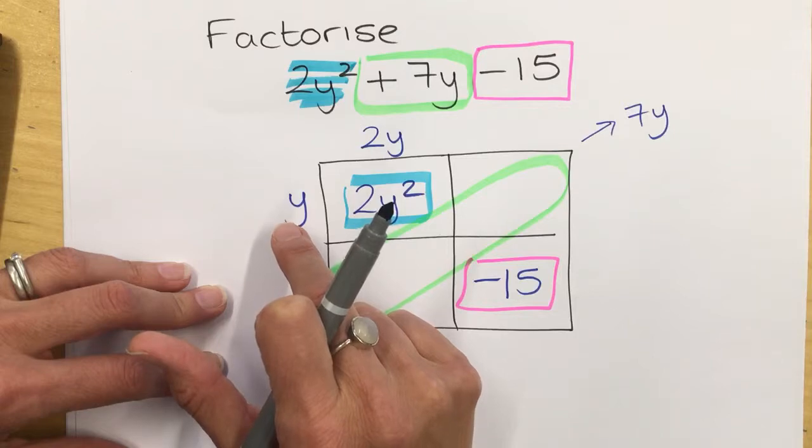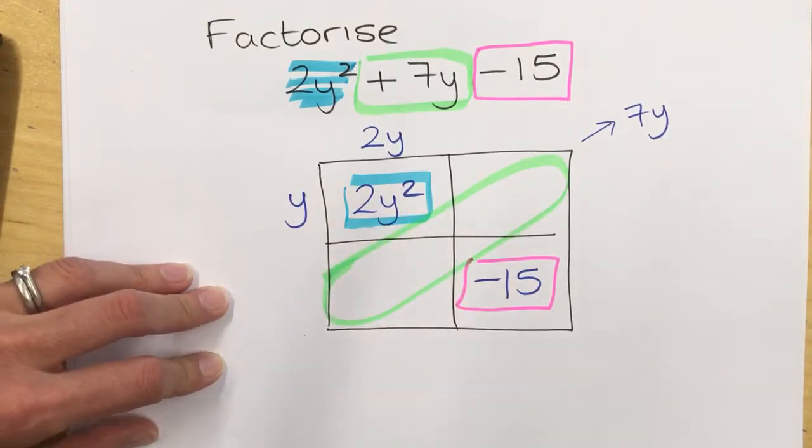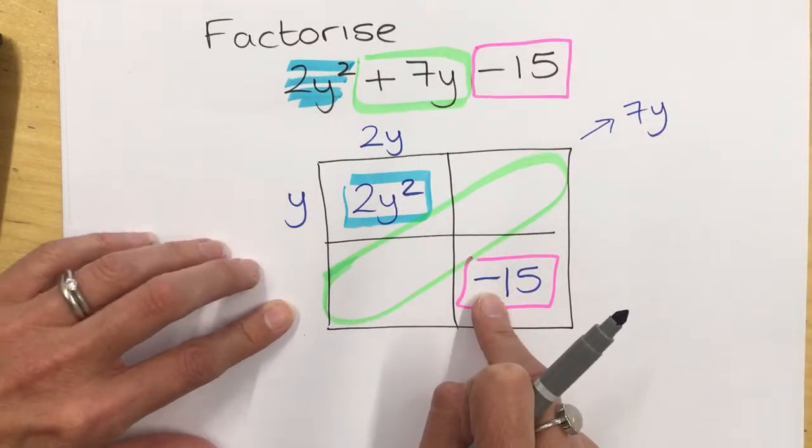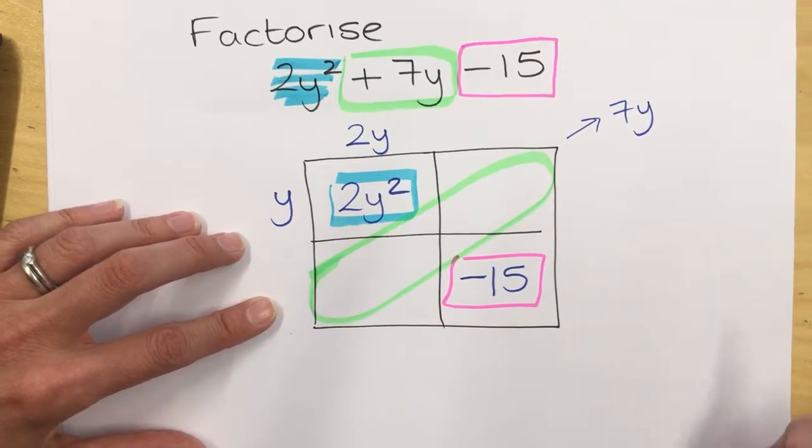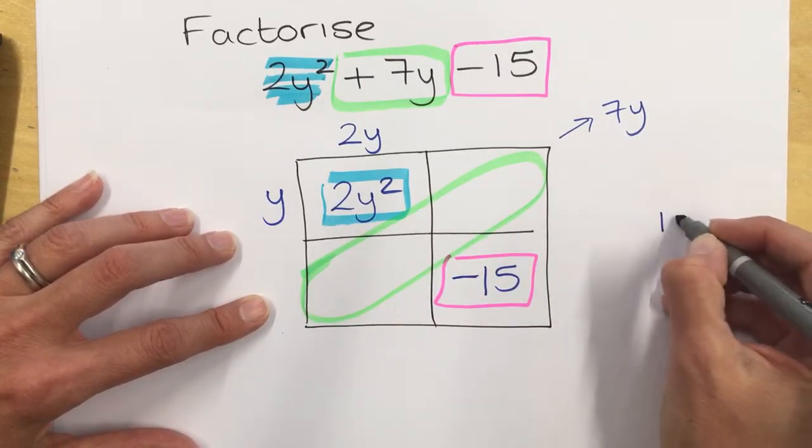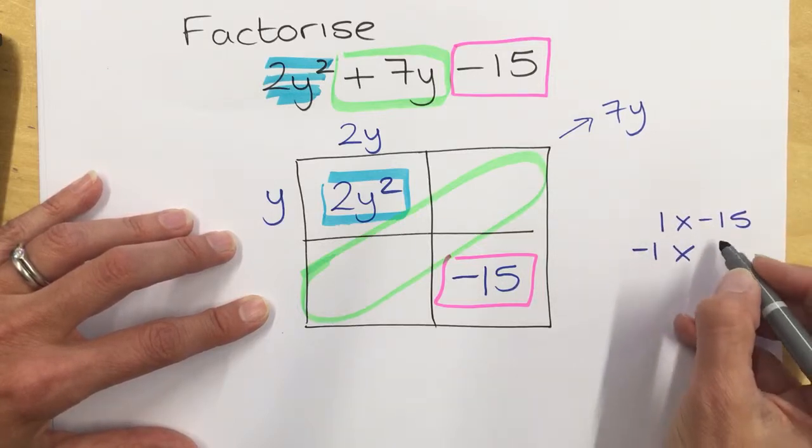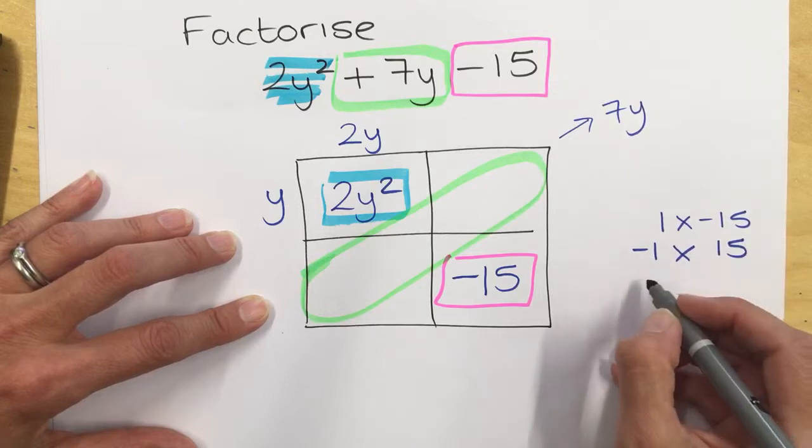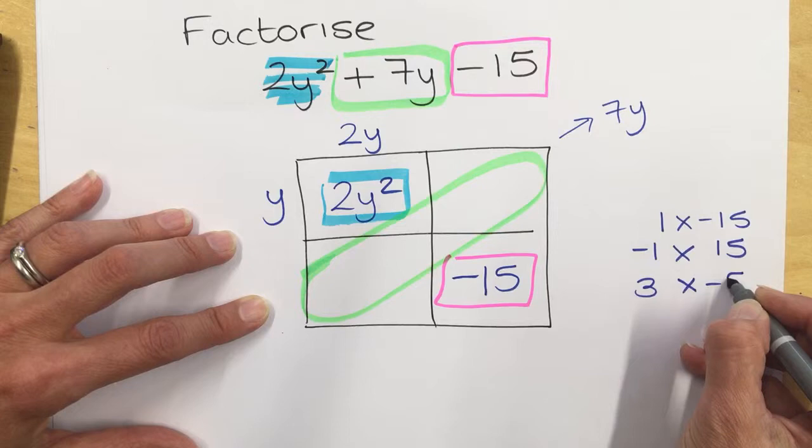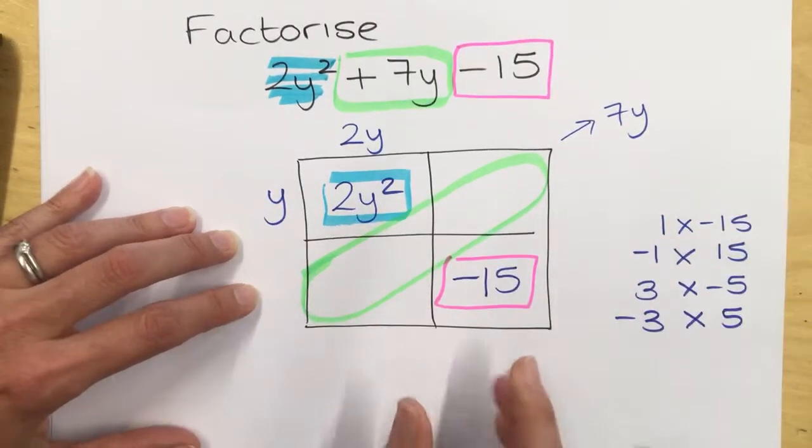So 2y multiplied by y is 2y squared. Now we've got to think about what could possibly go around here to give us the minus 15. You've got to think about the combinations of how to make up minus 15, where you can have 1 multiplied by minus 15, minus 1 multiplied by 15, you can have 3 multiplied by minus 5, or you can have minus 3 multiplied by 5. They are my combinations.